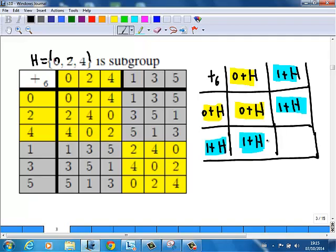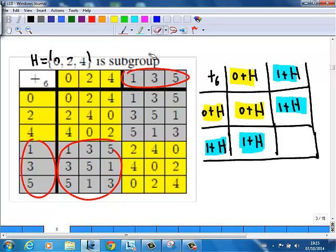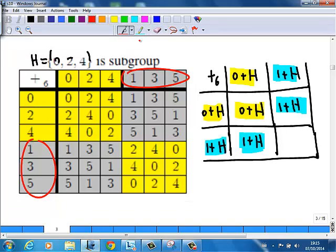And lastly, if you add something in 1, 3, 5 - which is 1 plus H - something in 1, 3, 5 add something in 1, 3, 5, what do you end up with? You find that you're going to get something in 2, 4, 0, which is H, or 0 plus H.